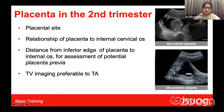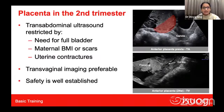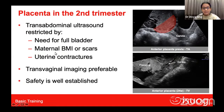Having looked at placental morphology and its relationship to the internal cervical os, we measure the distance of the inferior edge from the internal os to determine whether it is low-lying. Transvaginal imaging is preferable to transabdominal because it provides higher resolution images, allowing clearer visualization of the internal os and the lower edge of the placenta, giving a more exact estimation of the distance between them.